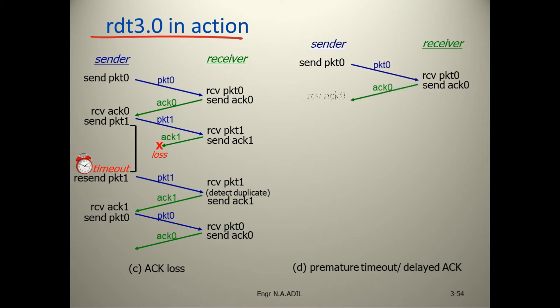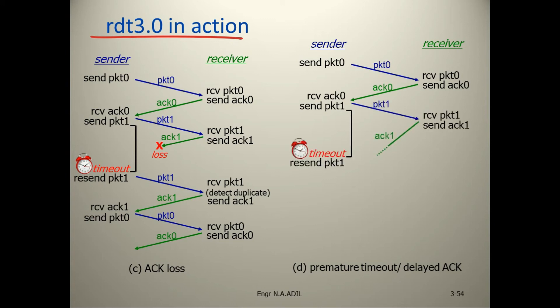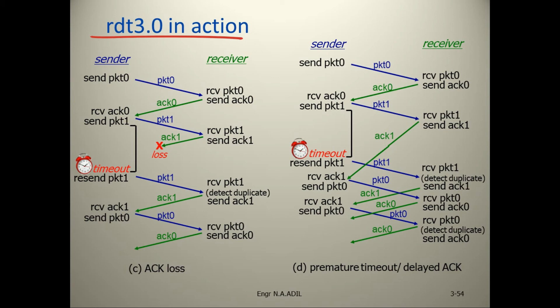This is the premature timeout / delayed acknowledgement scenario: sender sends packet 0, receiver receives it and sends acknowledgement. Sender then sends packet 1 but timeout occurs before the delayed acknowledgement arrives. Sender resends packet 1; receiver detects the duplicate and sends acknowledgement 1 again. This series carries on for 2 to 3 repetitions before returning to the normal session.